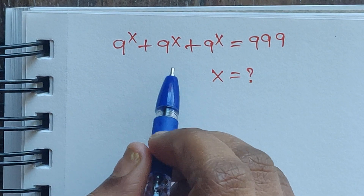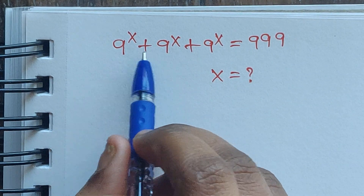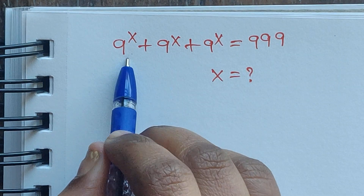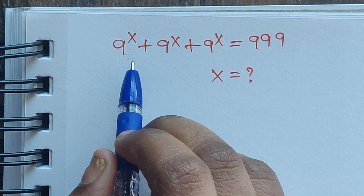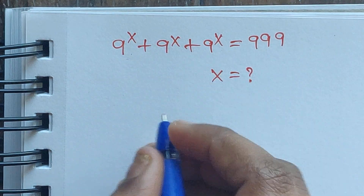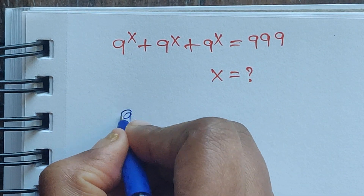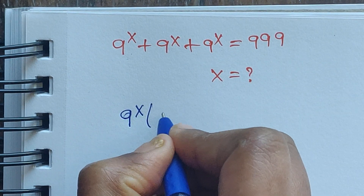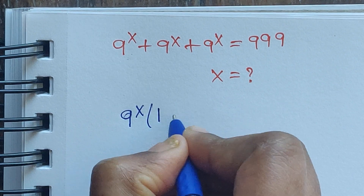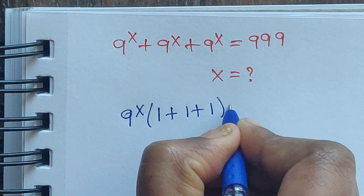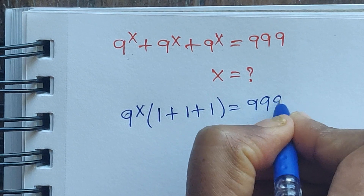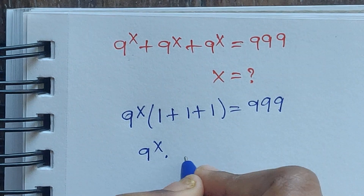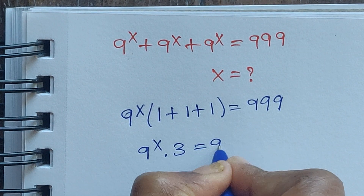So how do we solve this problem? In these three terms we have a common number, that is 9 to the power of x. So we can take out the common factor 9 to the power of x. When it comes out common, we write the remaining terms: 1 plus 1 plus 1, so 9 to the power of x times 3 equals 999.